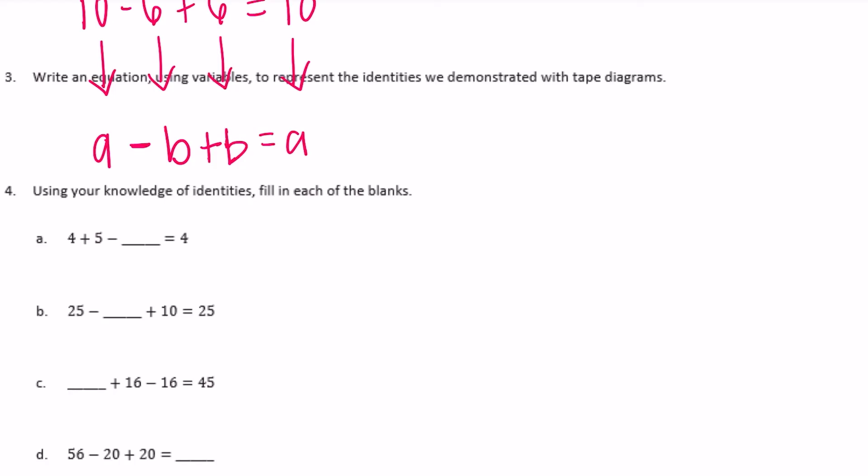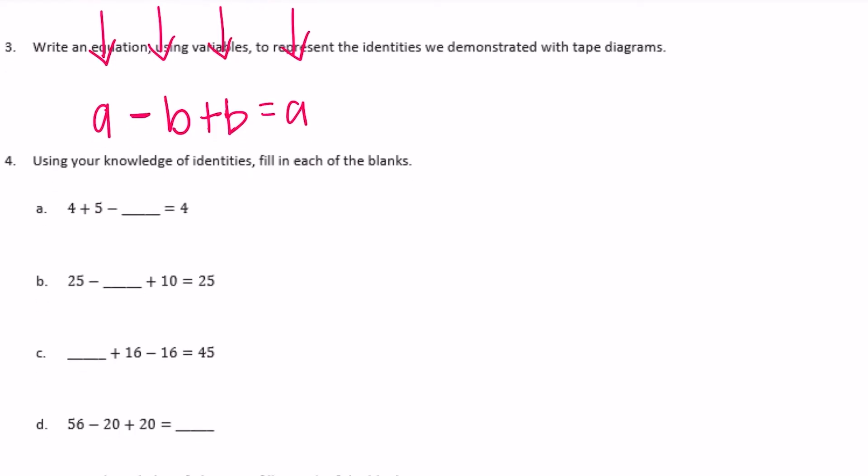Using your knowledge of identities, fill in each of the blanks. So 4 plus 5 minus blank equals 4. So we're wanting to get back to 4 and we started with 4. So if we add 5, if we want to get back to 4, we're going to have to subtract 5.